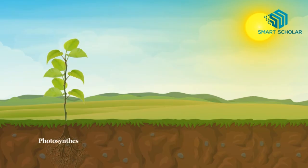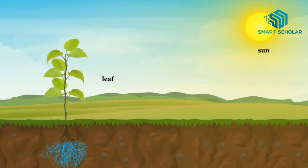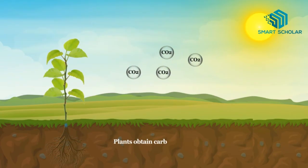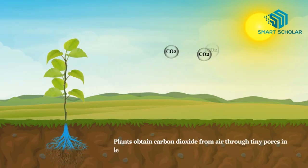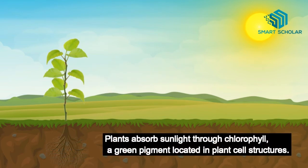Photosynthesis occurs mainly within the leaves. Photosynthesis requires carbon dioxide, water, and sunlight. Plants get water from soil through roots. Plants obtain carbon dioxide from air through tiny pores in the leaves called stomata. Plants absorb sunlight through chlorophyll, a green pigment located in plant cell structures.